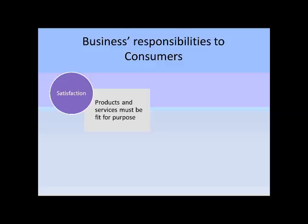For example, a computer must be able to run the type of software or connect to the type of networks advertised. There is one exception in Australian law to the fit for purpose requirement, and that is the provision of software. Because without fail all software contains bugs, if software had to be warranted as fit for purpose, consumers would be able to sue software companies for refunds. Instead, software is specifically warranted as not fit for purpose, but the company will endeavour to fix any problem.